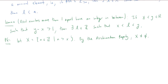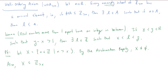Because every element in big X is greater than little x, we know that X is a subset of the set of integers greater than x. That gives us the two things we need for the well-ordering axiom: a non-empty subset with little x as a lower bound. So the well-ordering axiom implies that capital X has some minimal element — call it little l.